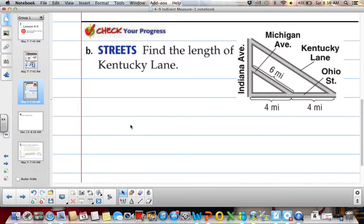We want to find the length of Kentucky Lane. So when we look at this, there's a lot going on here. So we have one triangle right here. And then we also have, I'm on my computer so that's why I can't do it very straight, we also have this big triangle.